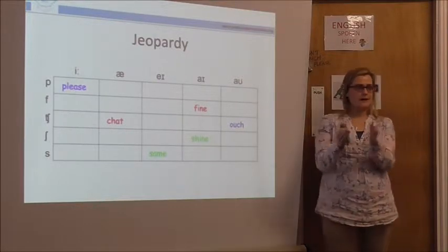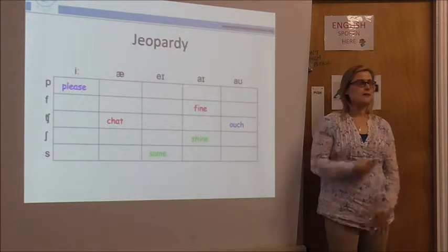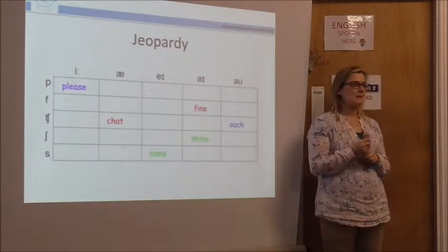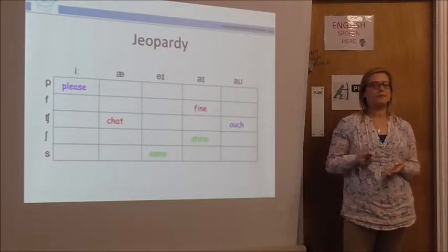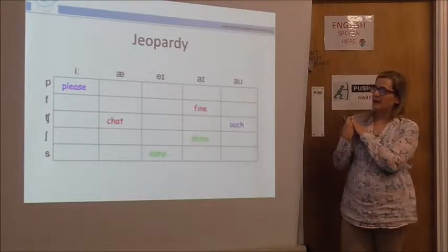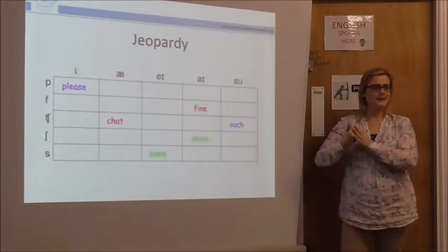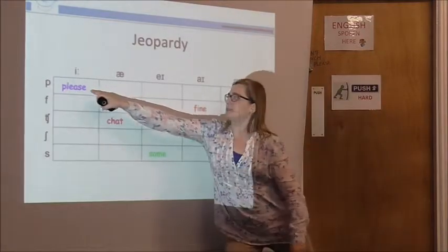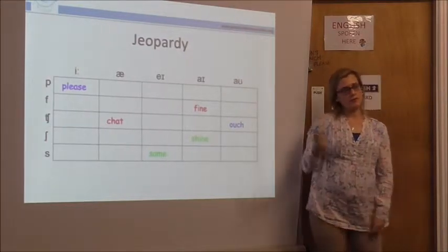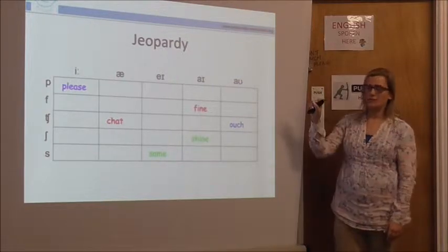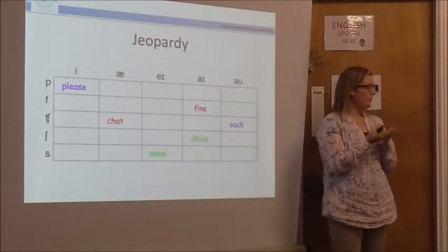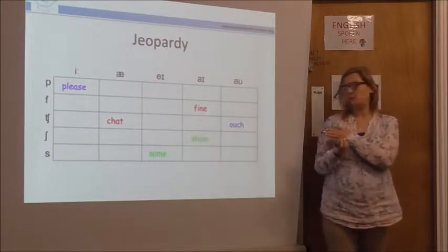You divide the class into different teams and assign each team a color — or if you don't have different markers, different symbols or letters A, B, C, D. You go to the first team and they say, for example, 'I want p, e.' You confirm the space, and they have to come up with a word that contains both of those sounds. If they come up with a correct word, you write it in their color and they've won that space. If they can't think of something, you go to the next team, and if they can think of one for the same space, they win the point. The sounds don't have to be in any particular order.